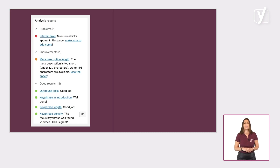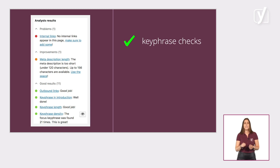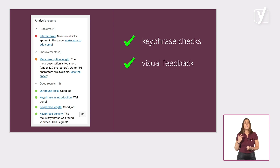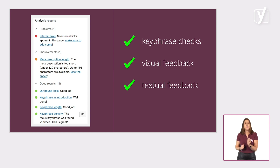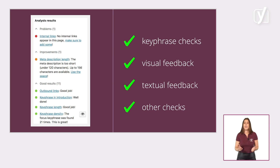Let's get back to the analysis. After you've entered your focus keyphrase, we run several checks on your content. A lot of them have to do with your keyphrase — did you use it in your title, your introduction, your headings? Did you use it often enough or maybe too often? We give you feedback about all these things. Green, orange and red bullets indicate what you did well and what needs improvement. The feedback tells you exactly how you can improve your text. The SEO analysis also gives you feedback about your links, your images, and snippet elements.